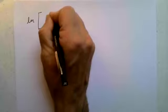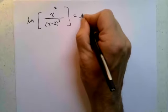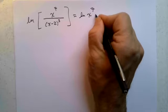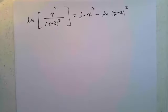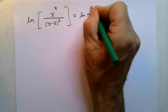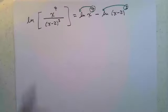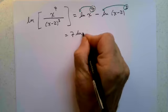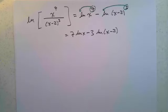If I have the natural log — which of course means log base e — of x to the seventh over x minus two cubed, that is a quotient. So the log of the quotient is the difference of the logs: natural log of x to the seventh minus natural log of x minus two cubed. Then we pull those exponents down — the seven comes in front and the three comes in front — giving us seven times natural log of x minus three times natural log of x minus two. That's as far as that one can go.